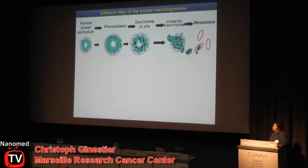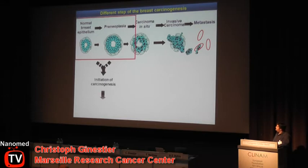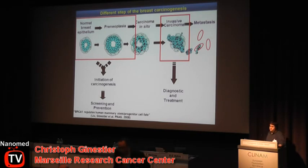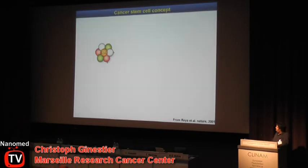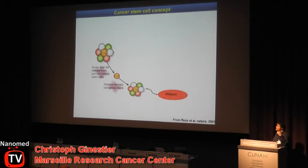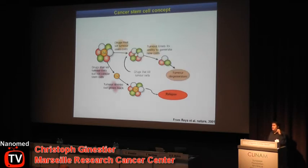Now that we have a biomarker, we can follow the role of the cancer stem cell population along carcinogenesis from initiation to metastasis formation. I'm going to focus on what we have done to improve cancer treatment. One important thing: when the cancer stem cell concept emerged, people suggested that the cancer stem cell population might resist conventional therapies and give rise to relapse. There are now several studies showing this is true — after chemotherapy or radiotherapy, the cancer stem cell population resists and gives rise to relapse. So it is very important to identify therapeutic targets that specifically target this population to eradicate cancer.